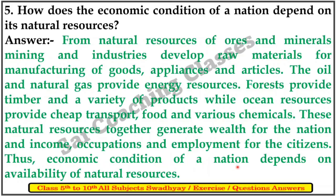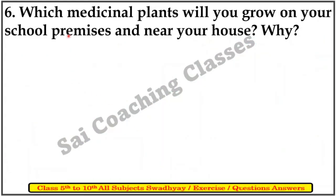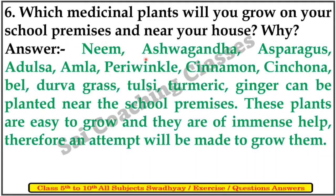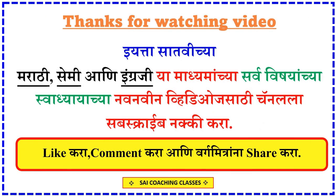Thus the economic condition of the nation depends on the availability of natural resources. Sixth question: Which medicinal plants will you grow on your school premises and near your house, and why? Answer: Neem, ashwagandha, asparagus, adulsa, amla, periwinkle, cinnamon, cinchona, bael, durva grass, tulsi, turmeric, and ginger can be planted near the school premises. These plants are easy to grow and they are of immense health benefit, therefore an attempt will be made to grow them.